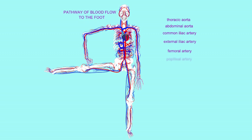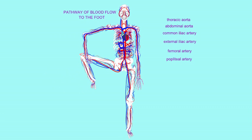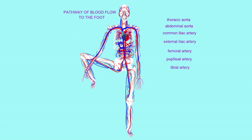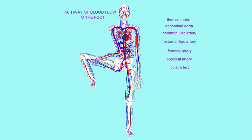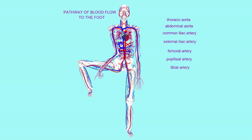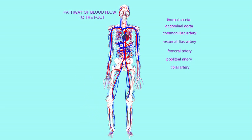It then pops back out again behind the knee, where it is known as the popliteal artery. In the lower leg, the popliteal artery divides into the anterior and posterior tibial arteries, and these can reach the muscles of the lower leg and the foot.